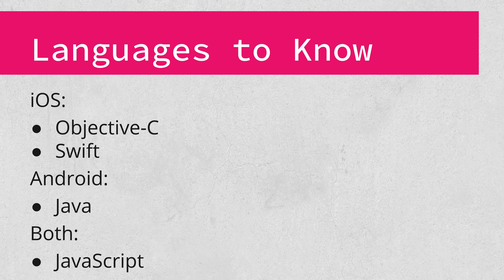Before we dive into the deep end, here's a short list of languages you should know for mobile testing. Regardless of what you're testing, you're almost certainly going to need to know JavaScript. Most mobile apps contain at least a few web views and JavaScript is super relevant there, not to mention the hybrid app frameworks. In addition, Objective-C and Swift are essential for iOS testing, and Java is essential for Android. It also wouldn't hurt to know Kotlin for Android, as it's being used for many newer apps, but it's not critical. You really just need to be able to get the gist of what the code is doing.